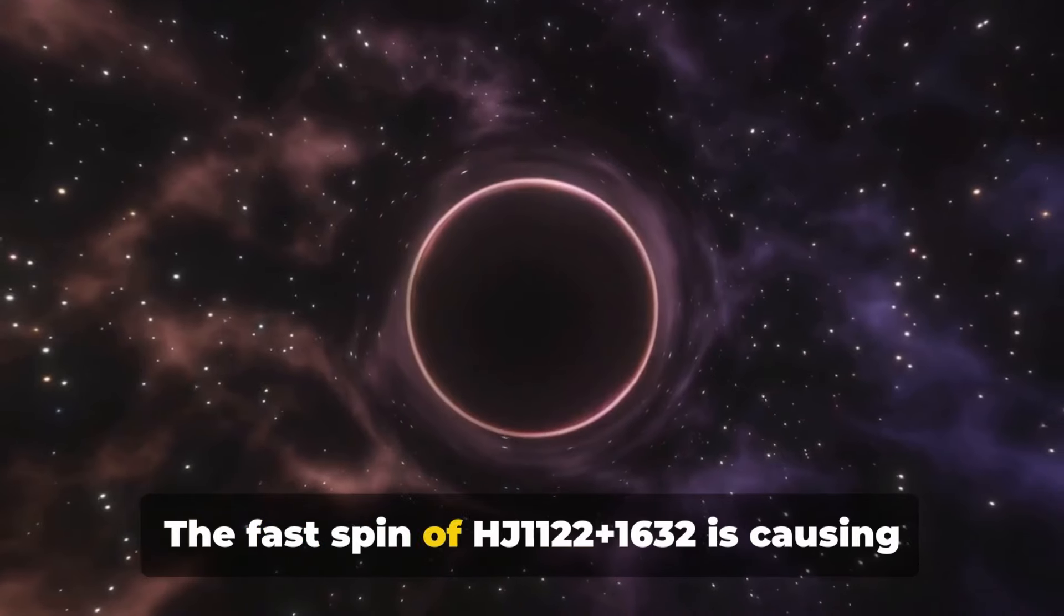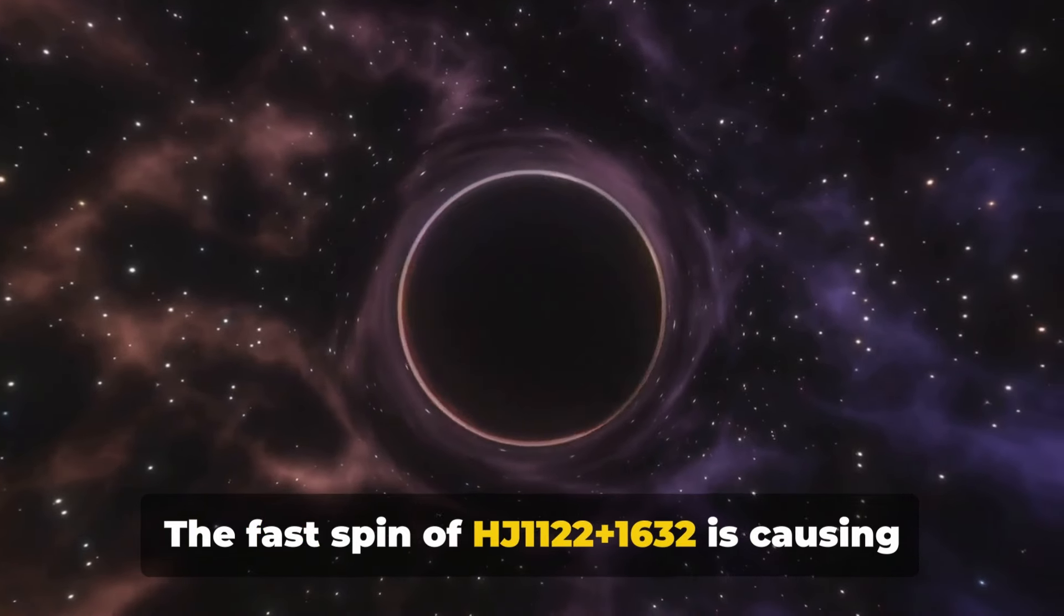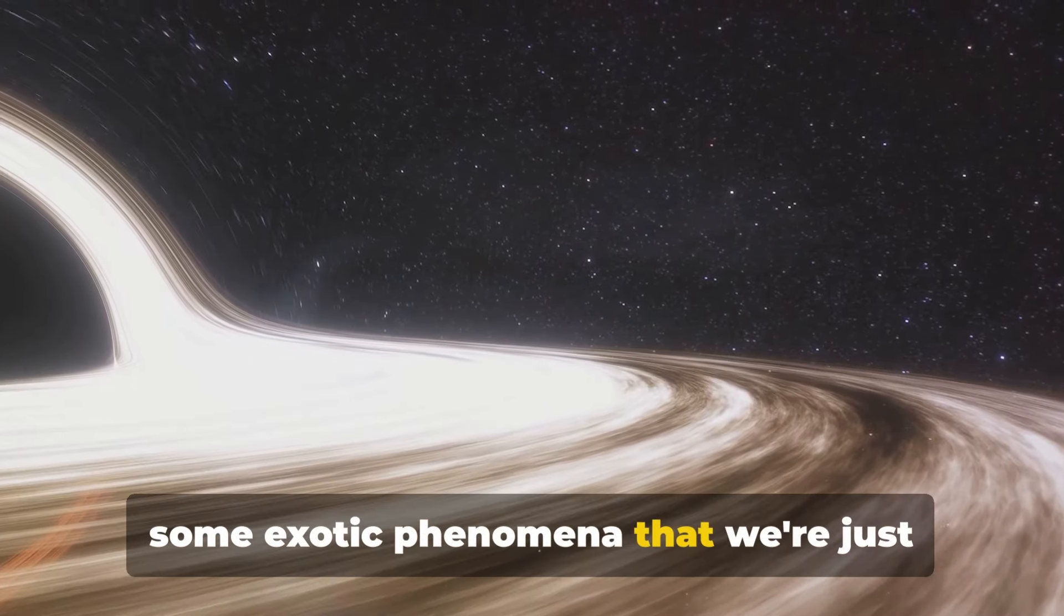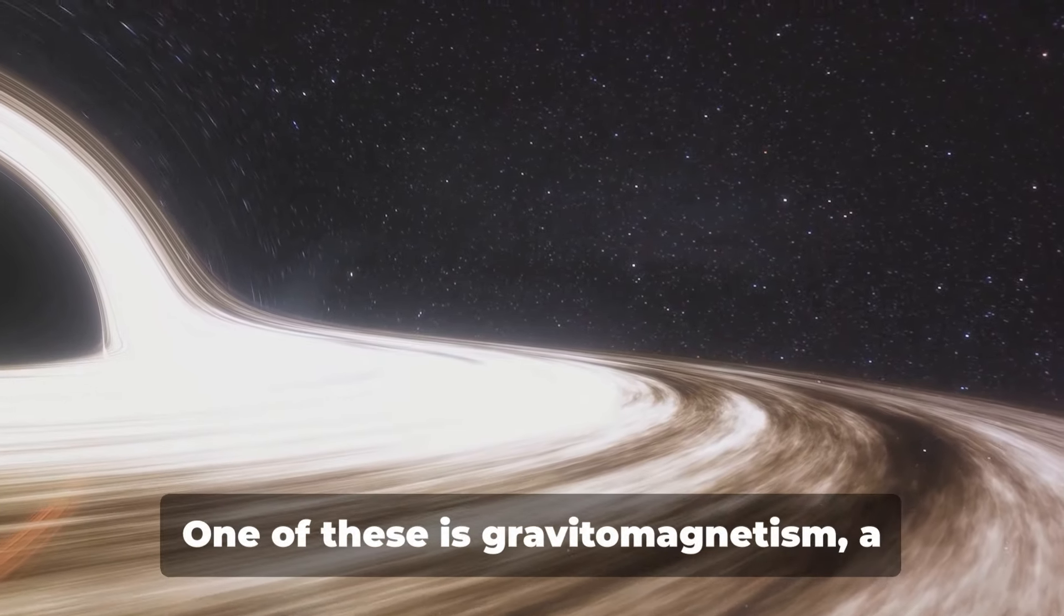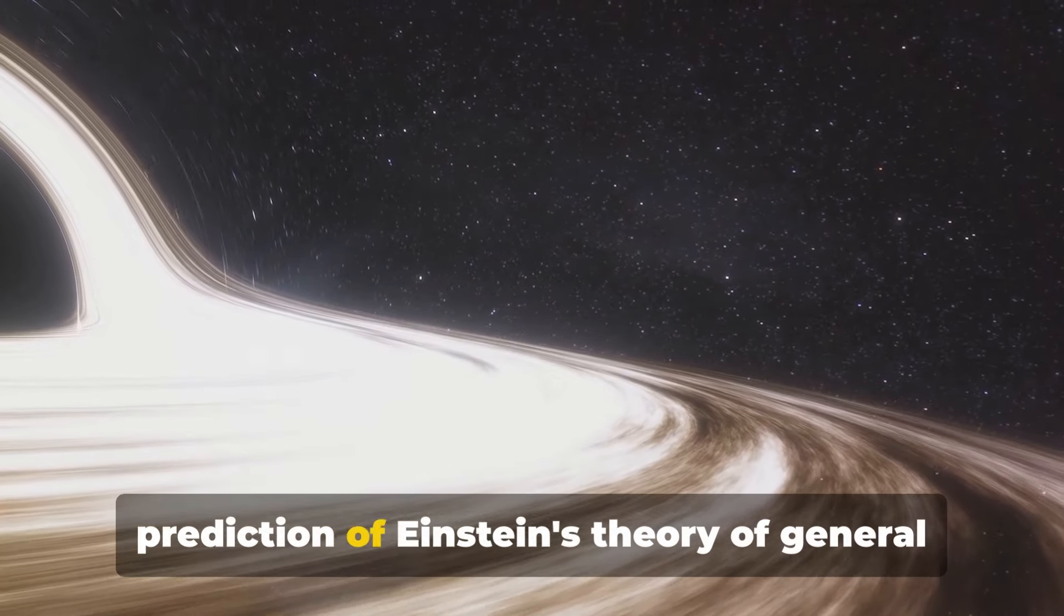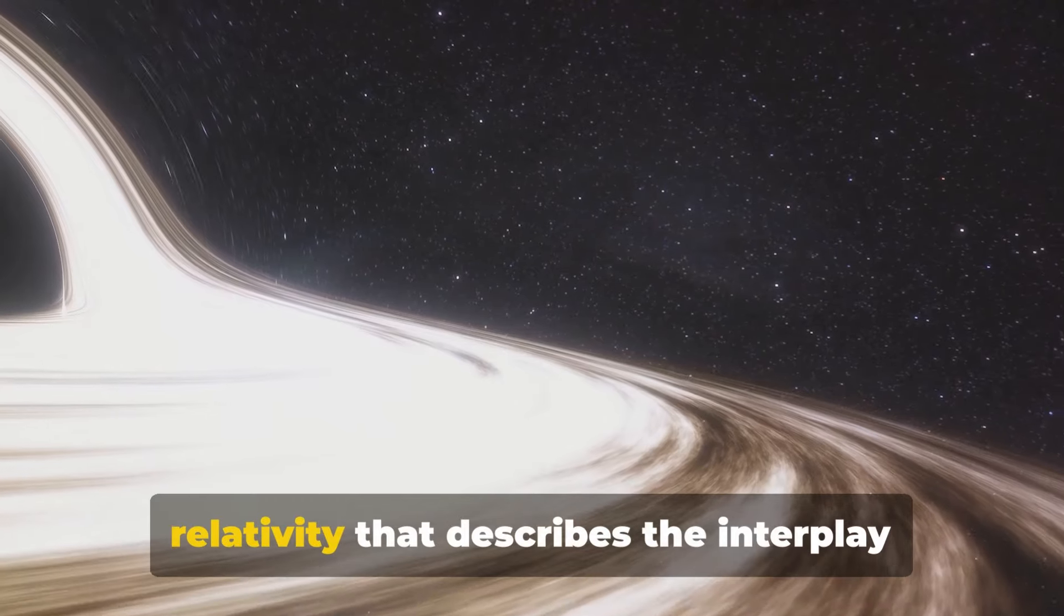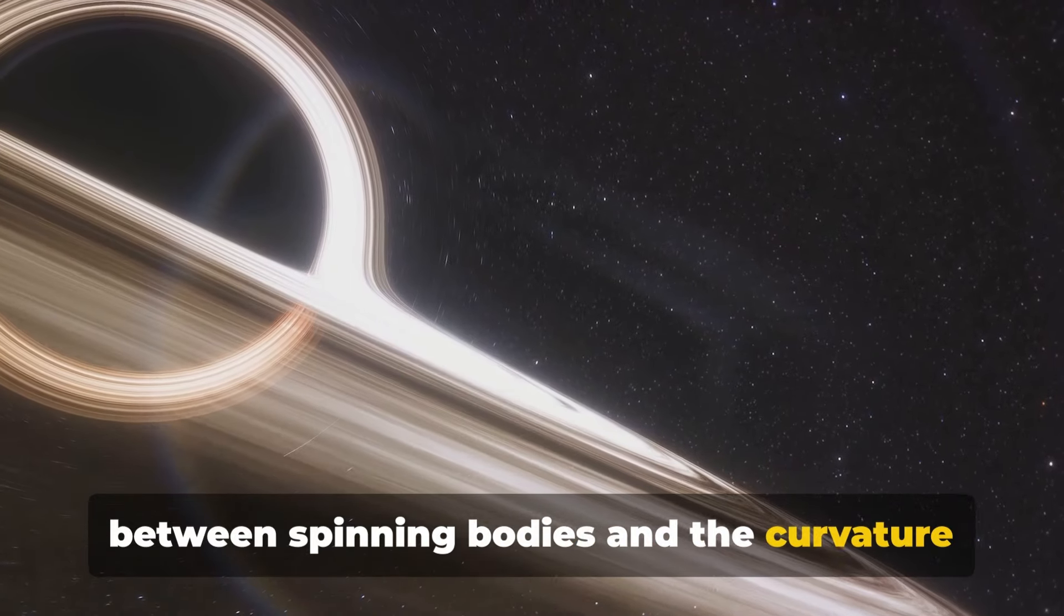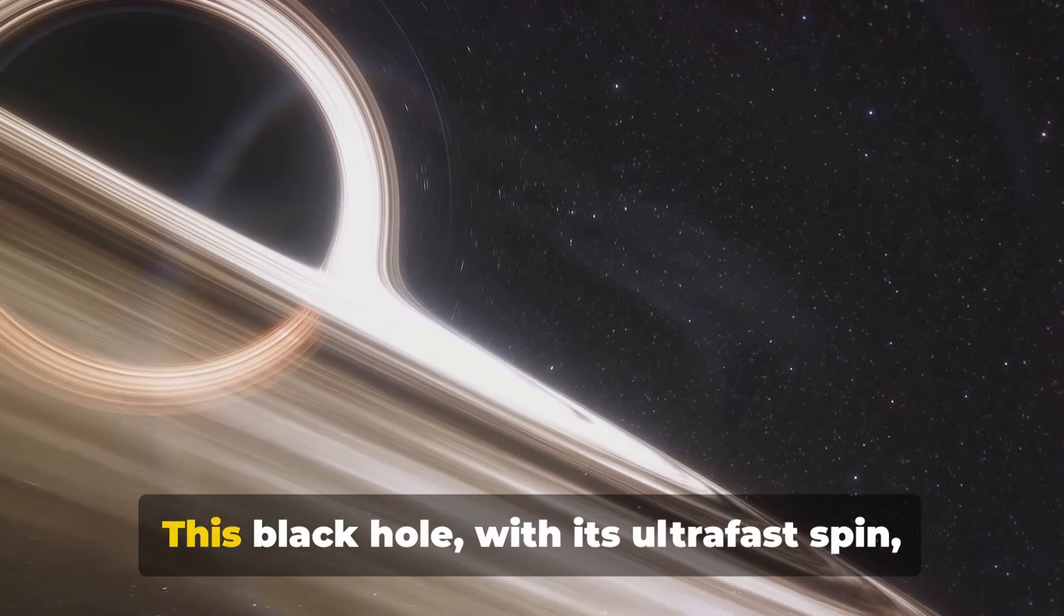The fast spin of HJ 1122 plus 1632 is causing some exotic phenomena that we're just beginning to explore. One of these is gravitomagnetism, a prediction of Einstein's theory of general relativity that describes the interplay between spinning bodies and the curvature of space-time.